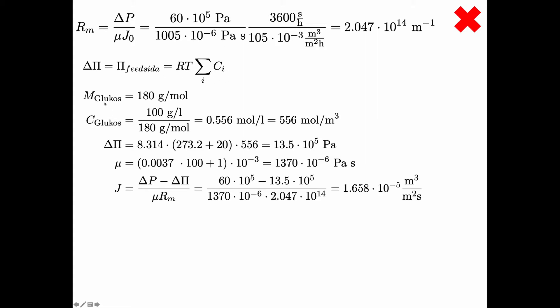We calculate that using RT and then sum of the concentration. The molar mass of glucose is 180 gram per mole and you had 100 gram per liter so you get 0.556 mole per liter. Note that's a non-SI unit. To calculate the osmotic pressure you need to translate that into SI units. That's mole per cubic meter so that's 556 mole per cubic meter.